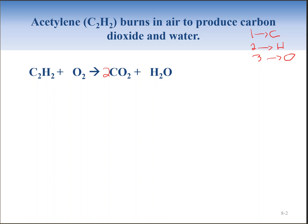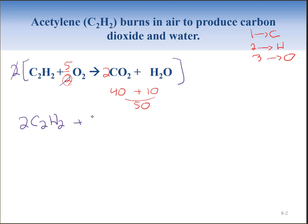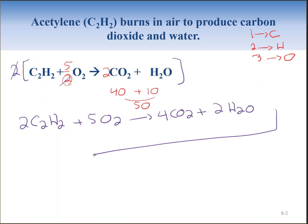Now we balance the oxygens: four oxygens from two CO₂ and one oxygen from water gives a total of five oxygens. The only way to get five oxygens is to give O₂ a coefficient of five-halves. But balancing coefficients must be whole numbers, so to eliminate the fraction, we multiply the entire reaction by two. This gives us 2C₂H₂ + 5O₂ → 4CO₂ + 2H₂O. The reaction is now balanced.